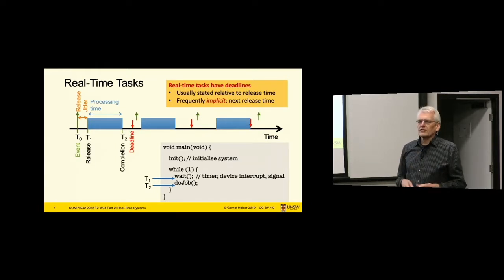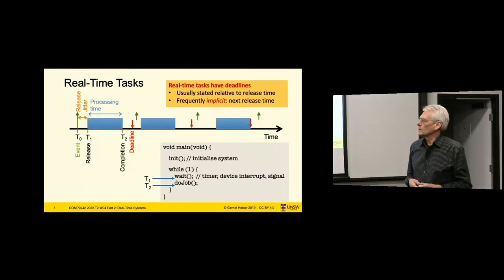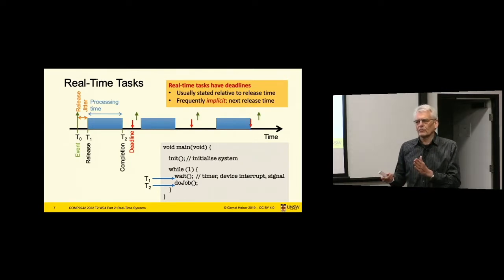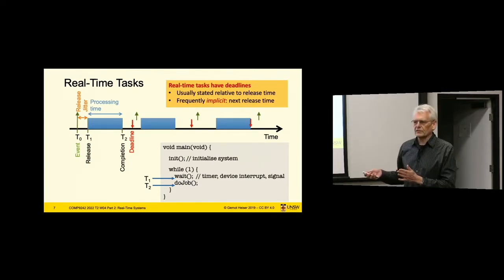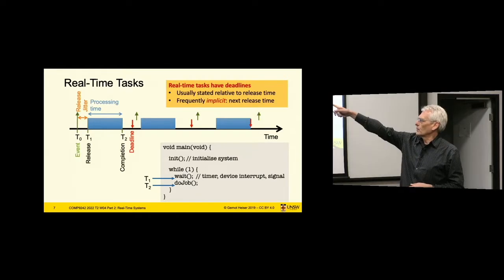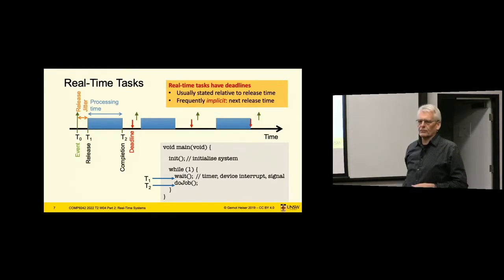Deadlines are very often implicit, meaning the deadline of processing one event is when the next event happens. So the red and green arrows fall on each other.